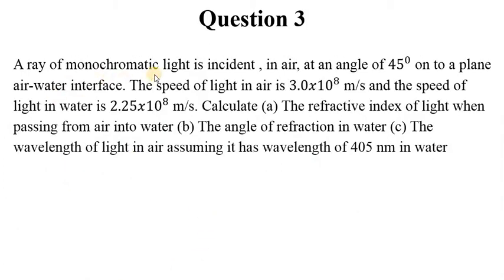Question 3. A ray of monochromatic light is incident in air at an angle of 45 degrees onto a plane air-water interface. The speed of light in air is 3.0 times 10 raised to the power 8 meters per second. And the speed of light in water is 2.25 times 10 raised to the power 8 meters per second. Part A, you're supposed to calculate the refractive index of the light when passing from air into the water. That is the interface interaction. Then B, the angle of refraction in water. C, the wavelength of light in air, assuming it has wavelength of 405 nanometers in water. So this is actually a three-part question. And therefore, we need to address part by part.